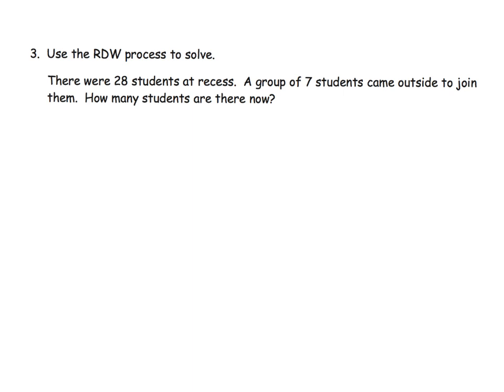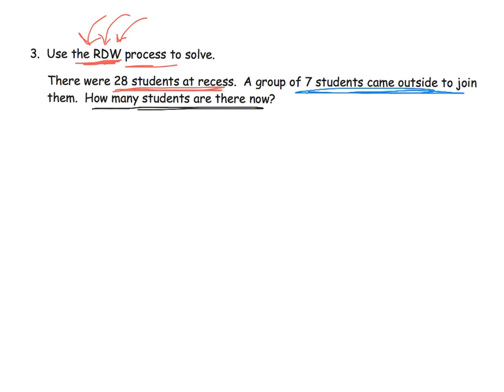Our last problem for this video says to use the RDW process — that's Read, Draw, and Write — to solve the problem. So we're going to read the question first. It says: there were 28 students at recess — I'm going to underline that because it seems important. A group of 7 students came outside to join them — underlining that too. And the question is: how many students are there now?